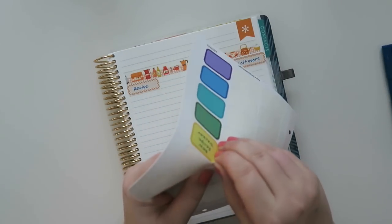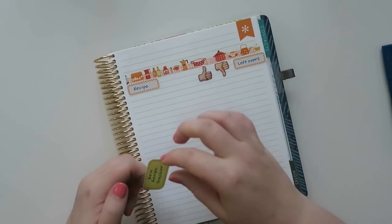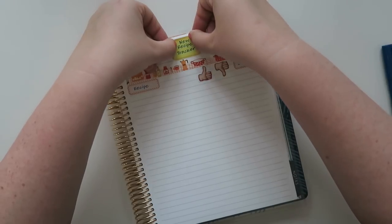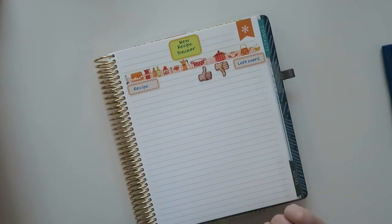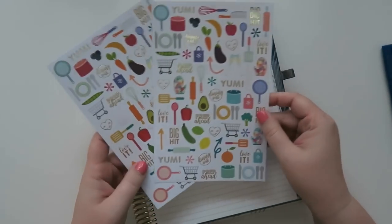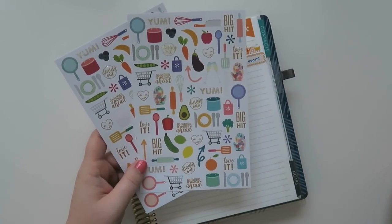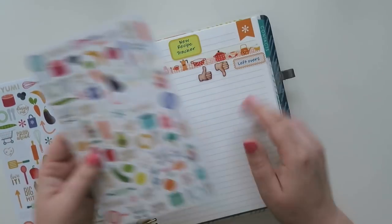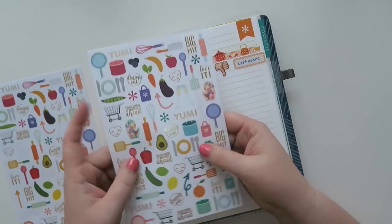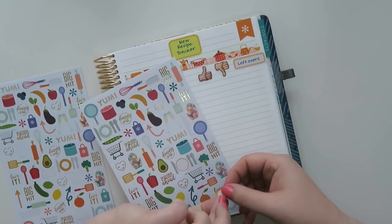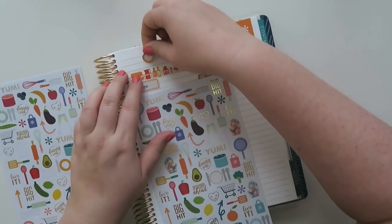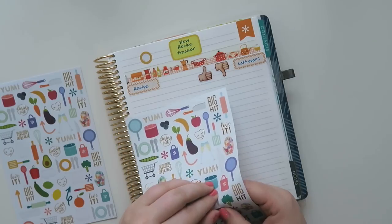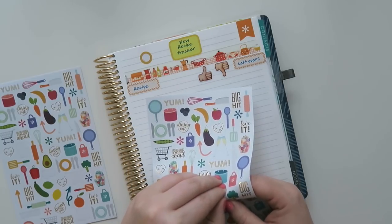All right so I just wrote new recipe tracker. Put this right up at the top. Hopefully that looks kind of centered. You never know. And then I'm going to use some of these Erin Condren decoration stickers that have lots of different things in here. And I think I'm going to use some of the same color scheme. So I'm going to grab this plate right here. I'm gonna put that over here with the fork and spoon.